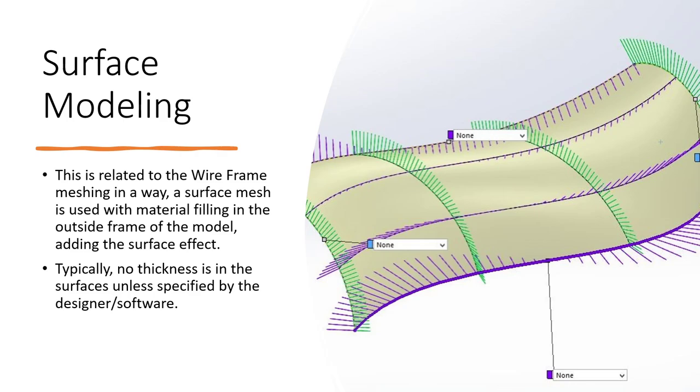Surface modeling is basically related to wireframe meshing in a way. It's really the wireframe with a surface finish. The surface mesh is used with the material filling in the outer frame of the model and adding a surface effect. Typically, there's no thickness in the surface unless specified by the designer. This is typically what we see in video games or plastic injection molding parts where you're really worried about the surface or a small thickness.